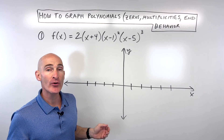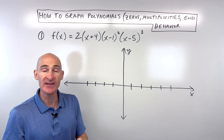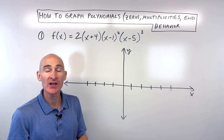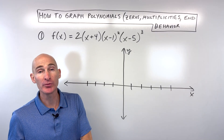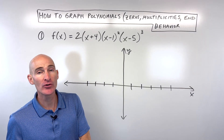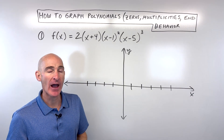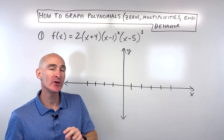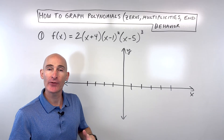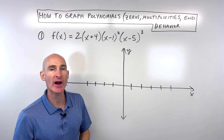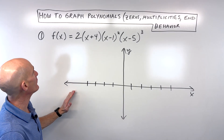In this video, you're going to learn how to graph polynomials using the zeros, the end behavior, and the multiplicity of the zeros, and we're going to get a good sketch of our graph. We're going to go through two examples. Let's do the first one together, and the second one you can practice on your own to kind of test yourself.